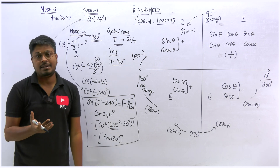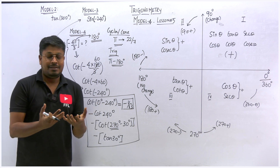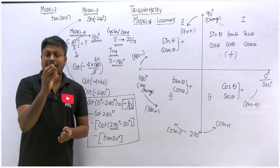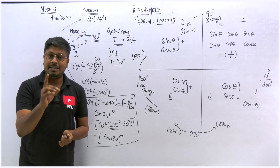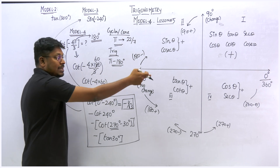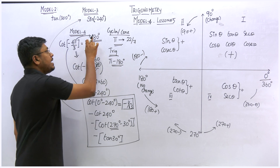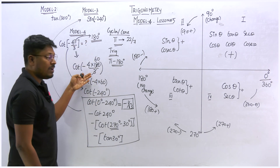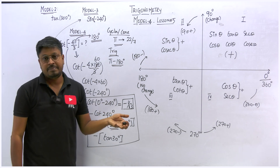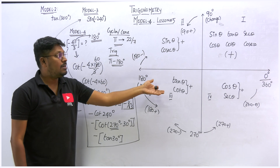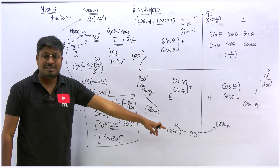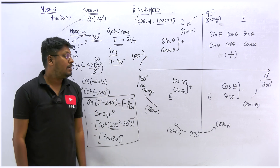Trigonometry has 50 to 60 formulas and properties. If you try to learn all 60 and go to the exam, it is not easy to recall them. That is why I teach limited formulas and apply them to all questions. That is also why I did not introduce pi notation earlier — you can simply replace pi with 180 and solve without needing a separate pi-based chart.